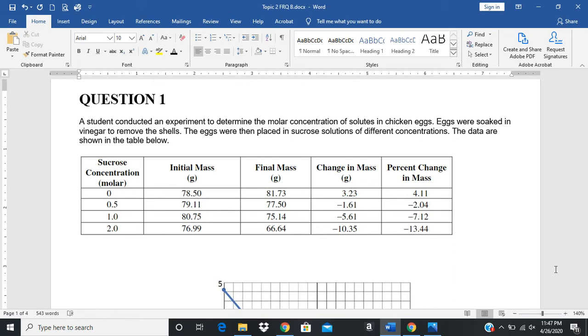What they did is they took raw eggs and soaked them in vinegar so that the shells would be removed. They then placed those eggs without the shells in sucrose solutions at different concentrations. You can see the results here. They had three different concentrations of sucrose and then a zero molar solution which functioned as their control group. In the zero molar solution there was a positive percent change in mass.